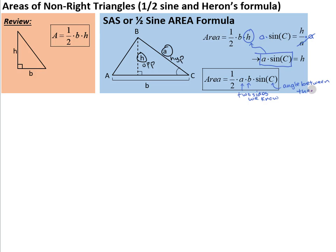And angle C is the angle between them. So if we know two sides and the angle between them, we can find the area of the triangle using this formula. One half times the two sides times the sine of the angle between them.